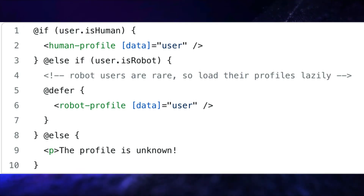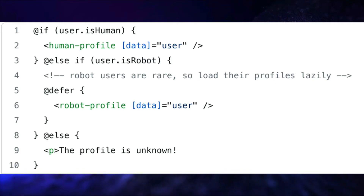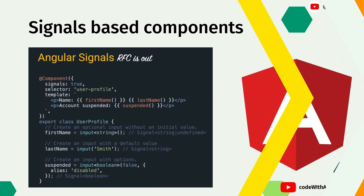One downside of this upcoming approach is that they move away from the possibility of writing these functionalities on your own. The new control flow will be a native feature of the template in Angular 17. The main takeaway is that there is a chance that *ngIf, *ngFor, and *ngSwitch might become deprecated — when and how is a future topic, but Angular wants to have one way of doing things.